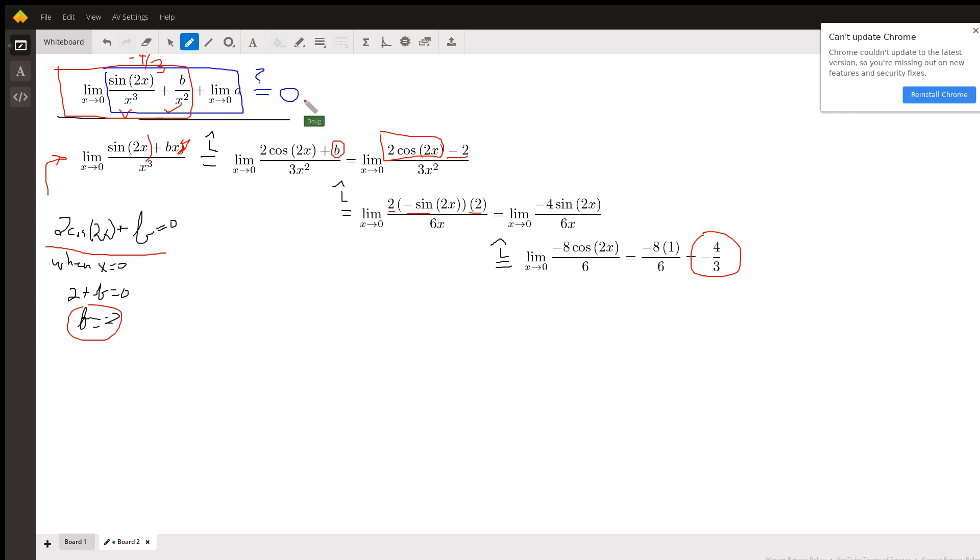And what we want to end up with is zero. So that means the limit of this constant must be positive 4/3. 4/3 plus -4/3 is zero. So okay, there you go. Hope that helped. If you have any questions, post a comment.